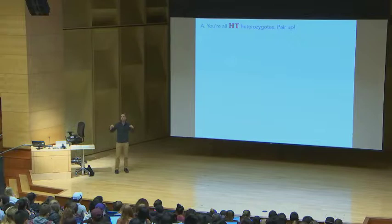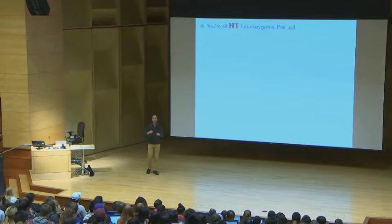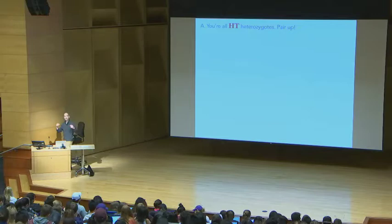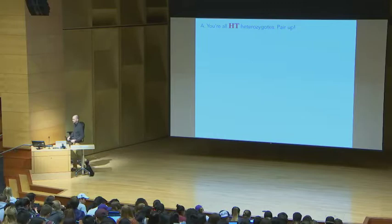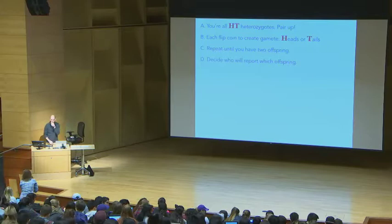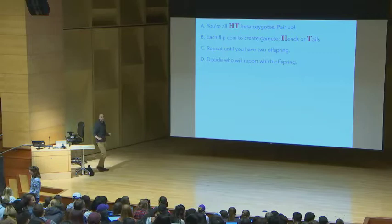We're doing this with the whole class. I don't have enough pennies. You're going to have to find a coin, use your phone, spin a pen, whatever you want. But pair up. This is why you learned the names of the people to your left and right. That's polite before you fuse gametes. Get two offspring. Decide who will report which one.